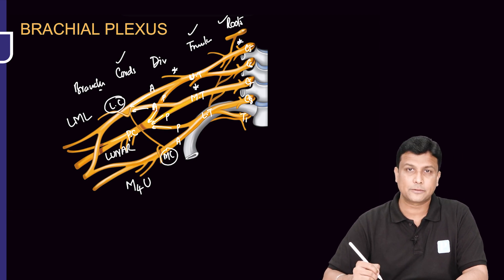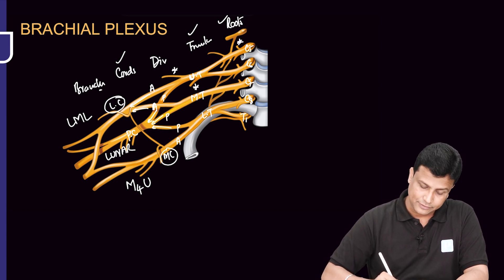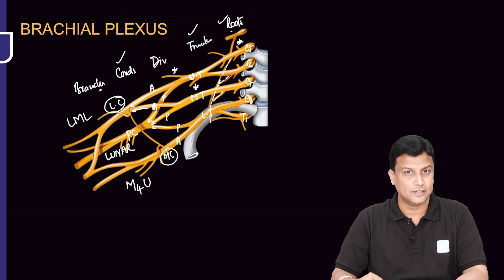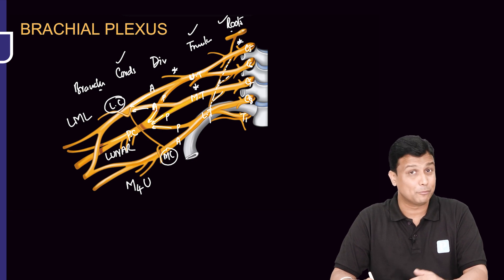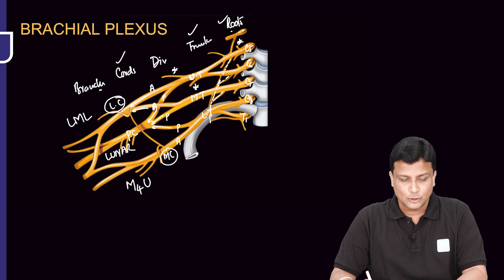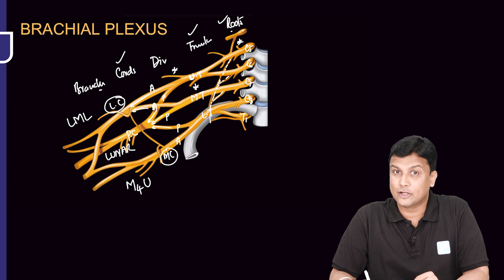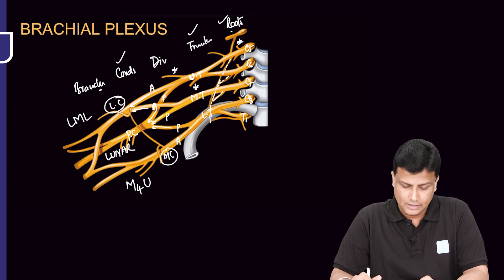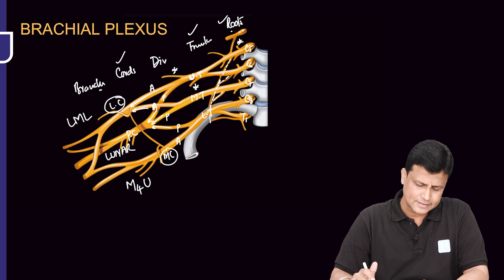From C5, the dorsal scapular nerve arises. C5, C6, and C7 together form the long thoracic nerve, which supplies the serratus anterior muscle — also called the boxer's muscle. The long thoracic nerve is also known as the nerve to serratus anterior or the nerve of Bell.